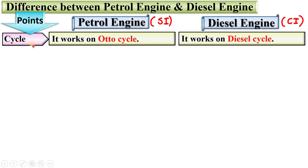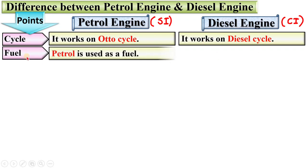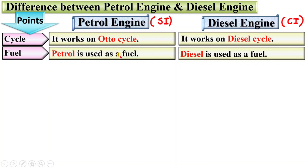First, according to the cycle, we can say petrol engine works on the Otto cycle, whereas diesel engine works on the diesel cycle. Petrol is used as a fuel in case of petrol engine, whereas in case of diesel engine, diesel is used as a fuel.